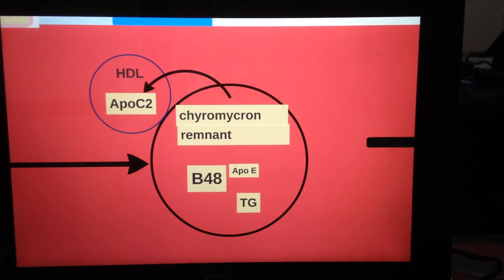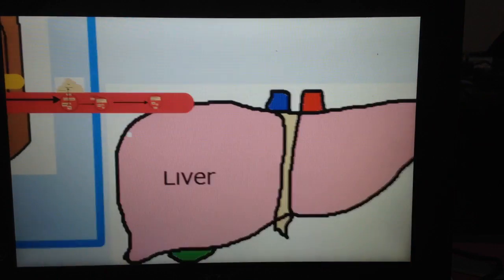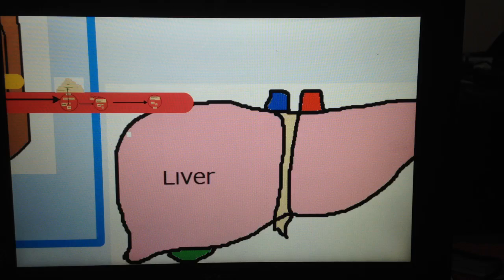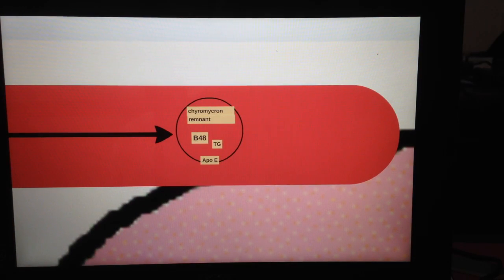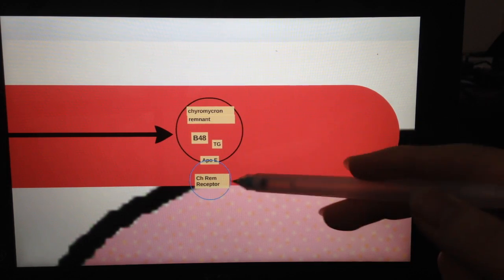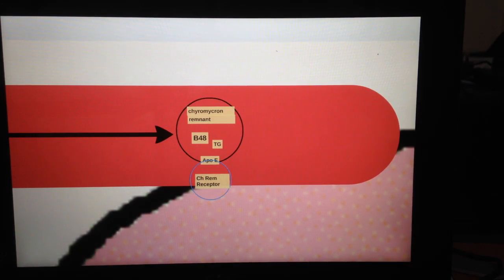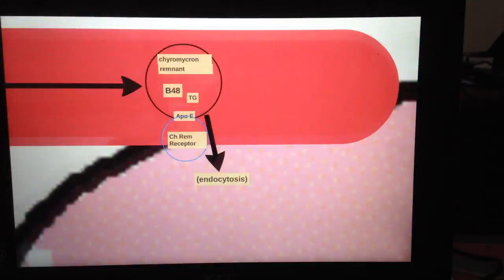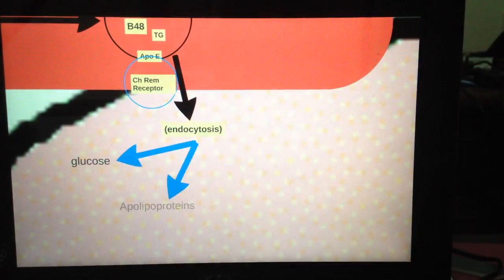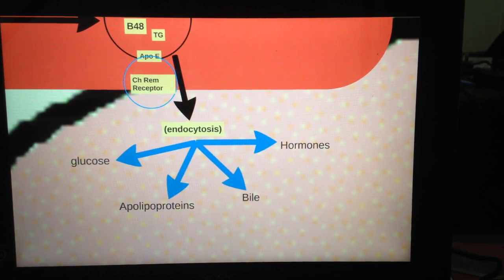So chylomicron remnant finds its way to the liver where it will be endocytosed using the chylomicron remnant receptors on the liver hepatocytes. And these can bind onto the chylomicron thanks to the ApoE that the HDL has left her. So what happens is that chylomicron will then become one with the hepatocytes. And it gets broken down into glucose, lipoproteins, bile, and hormones, and a lot of other things that will be reused and be reborn.